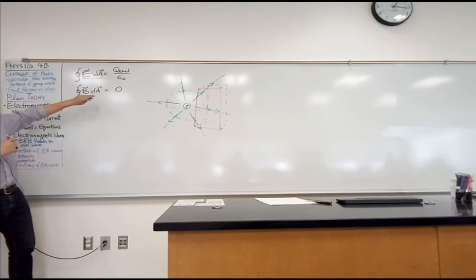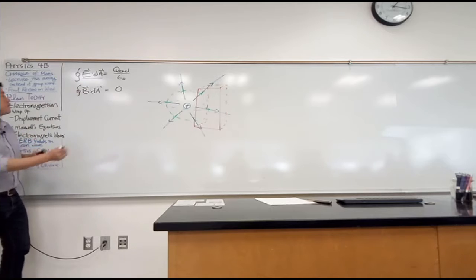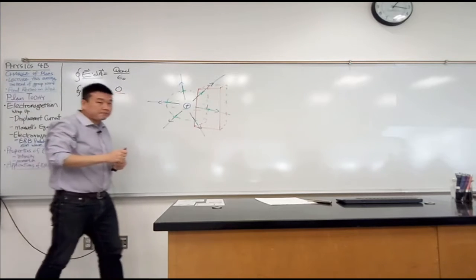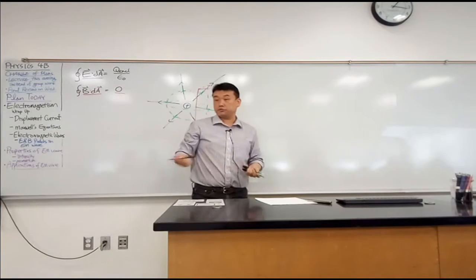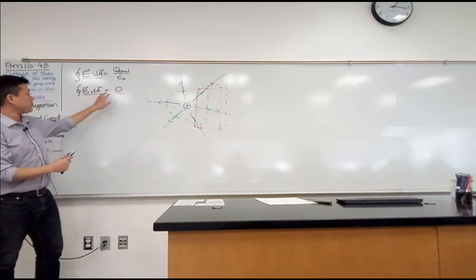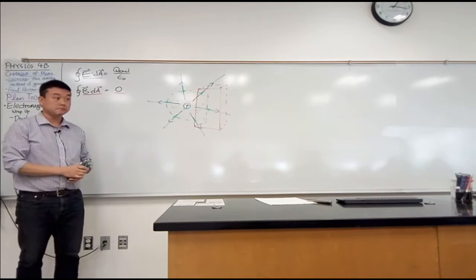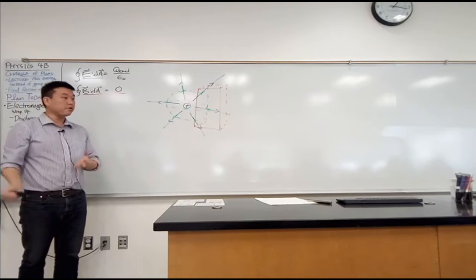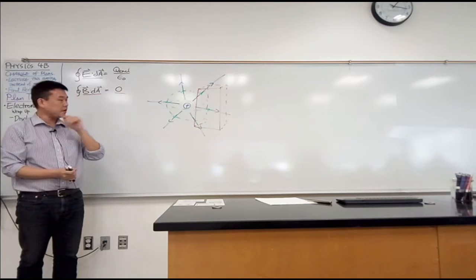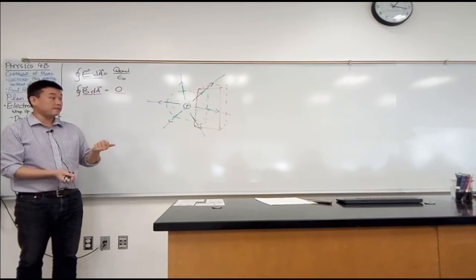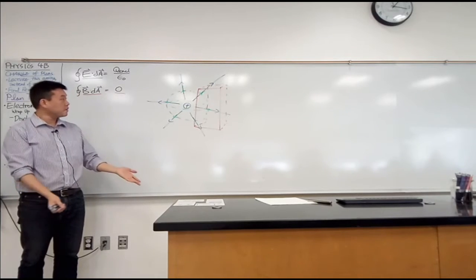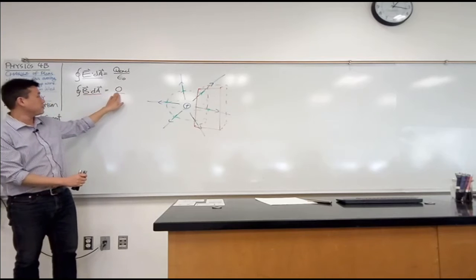In the context of magnetic field, intuitively, why does this make sense — that without any calculation you can say the net amount adds up to zero? What property of magnetic field — not about change, but something about magnetic field that's different from electric field — means that no matter how you set up the surface, it always adds up to zero?